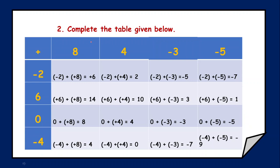Next we have question number 2: complete the table given below. You need to add the columns. Minus 2 plus 8 — different signs, subtract smaller from bigger, answer is plus 6. Minus 2 plus 4 — subtract 2 from 4, answer is plus 2. Minus 2 minus 3 — same sign, add 2 and 3 to get 5, with sign minus. Minus 2 minus 5 — same sign, add to get 7 with sign minus. Then 6 plus 8 — same sign, answer is positive 14. 6 plus 4 — answer is positive 10.